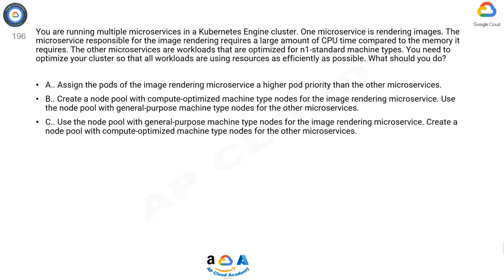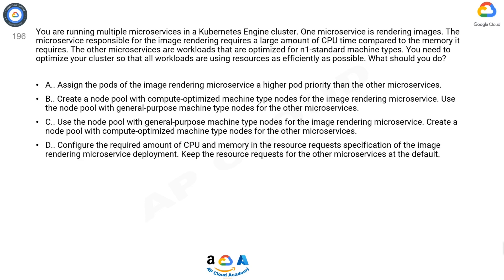C. Use the node pool with general-purpose machine type nodes for the image rendering microservice. D. Configure the required amount of CPU and memory in the resource request specification of the image rendering microservice deployment. Keep the resource requests for the other microservices at the default.